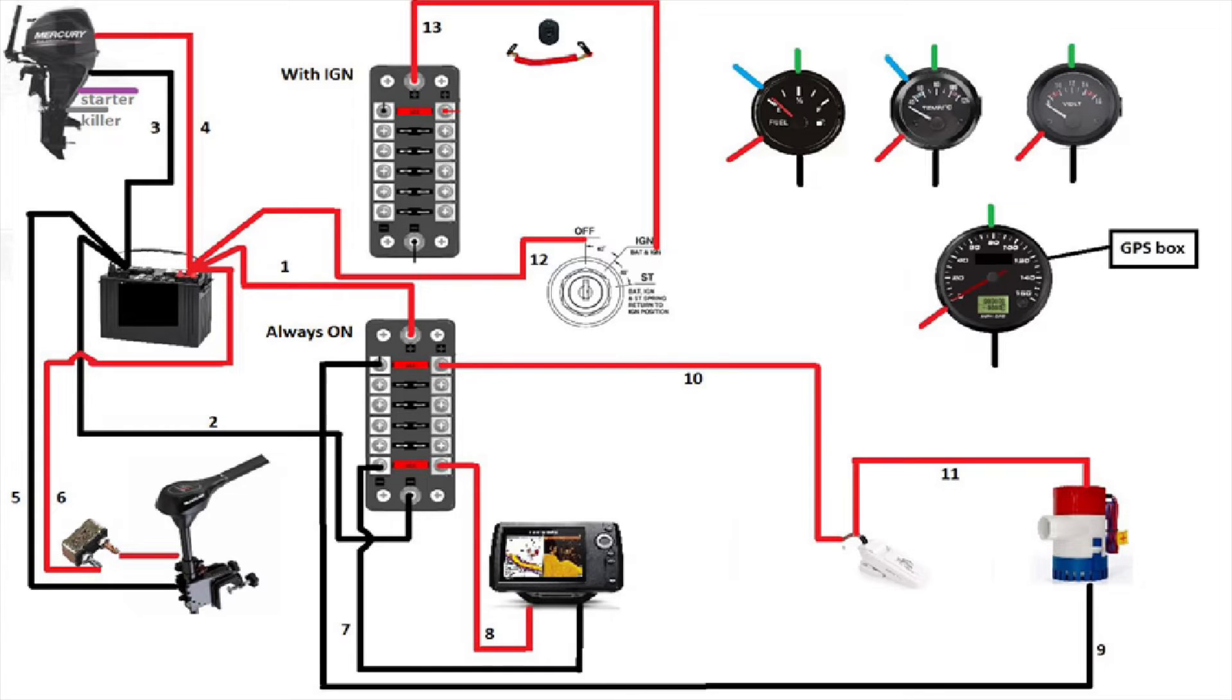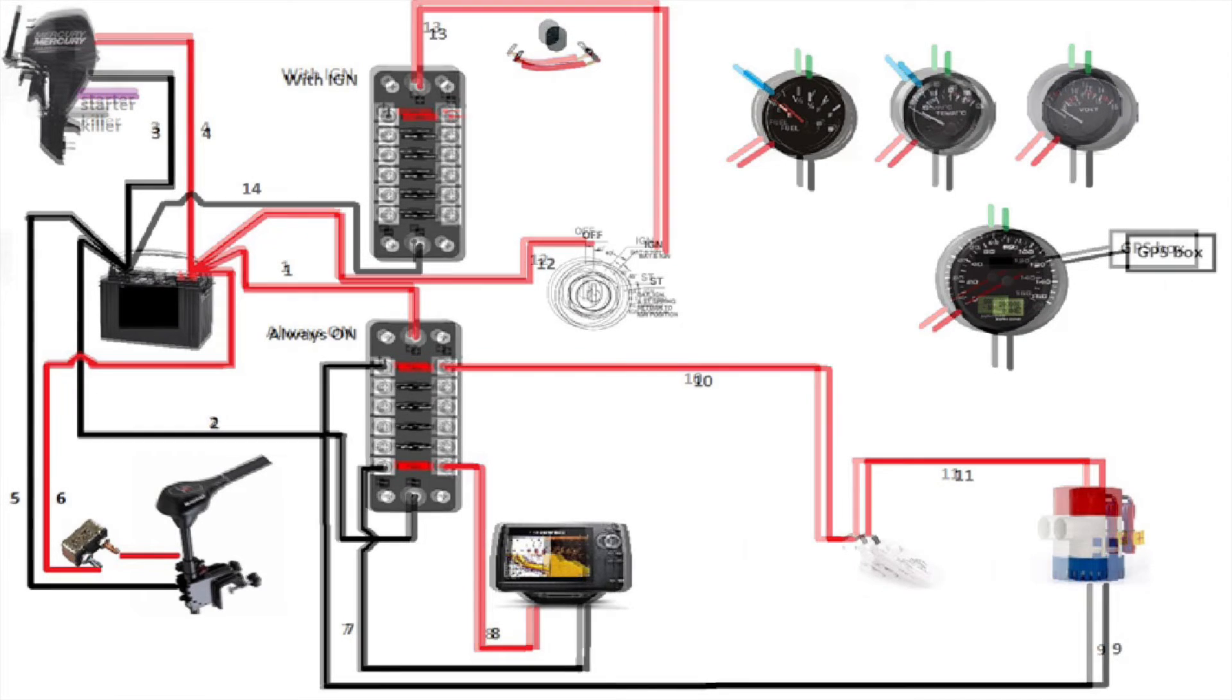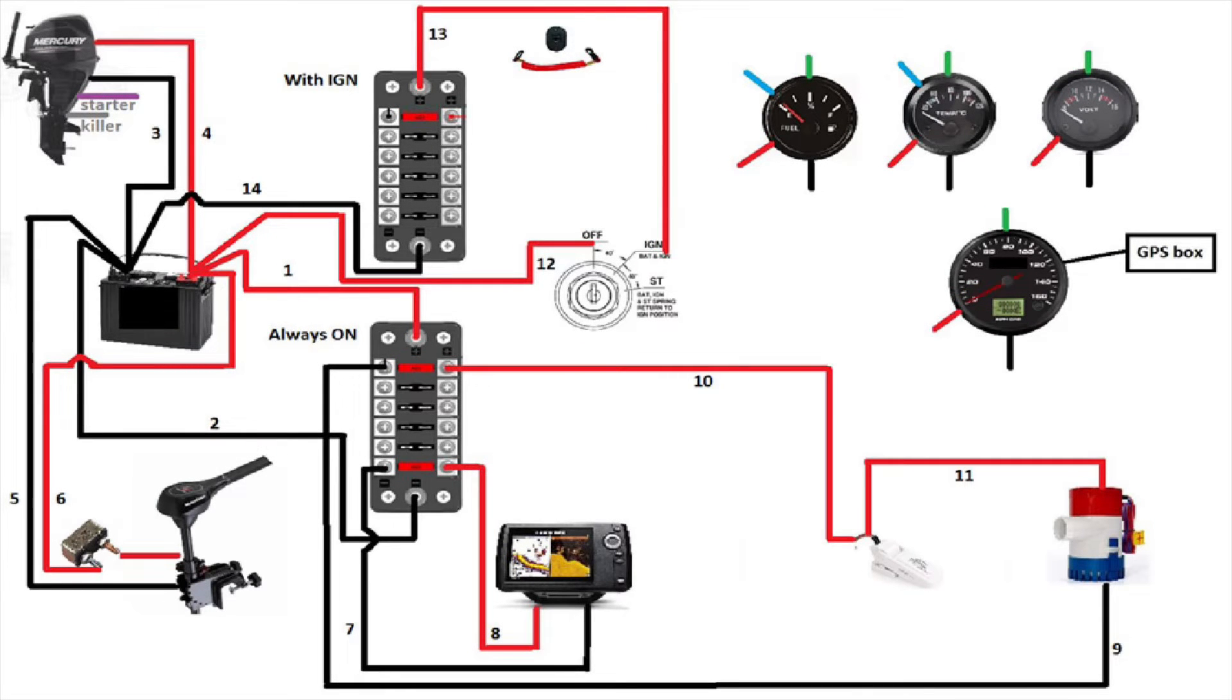This will give power to the accessories only when the key is turned, just like a car. Since we connected the positive to the fuse box, we'll need to connect the negative to the battery. Now this will complete the circuit of the fuse box with ING.